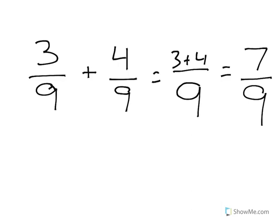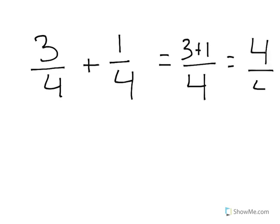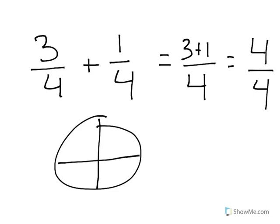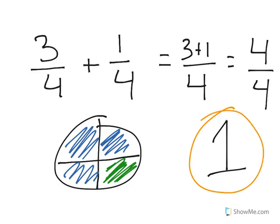Adding fractions with like denominators is very simple. Sometimes you might run into something like this. Our denominator is four — carry that straight over — then add three plus one, which gives us four fourths. If I draw a picture and shade it in, here's three fourths, then adding one fourth more, all of the pieces are full. So four fourths is actually the same as one whole. You can write it either way, but since all four pieces are still there, the answer is one whole.